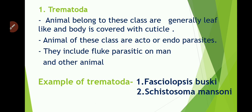Firstly, we are going to discuss about Trematoda. Animals belonging to this class are generally leaf-like and their body is covered with a cuticle. They have organs of attachment which are found on their anterior end. There is presence of a well-developed alimentary canal in these Trematoda worms. The animals of this class are ecto or endo-parasites, generally found in man and other animals. They include the fluke parasites on man and other animals.